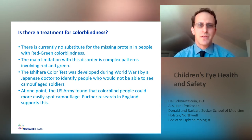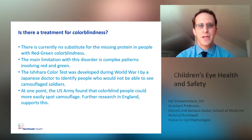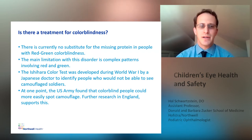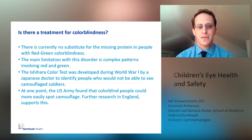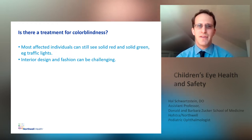There is currently no substitute for the missing protein in people with red-green colorblindness. The main limitation with this disorder is complex patterns that involve red and green. The Ishihara color test was developed during World War I by a Japanese doctor to identify people who would not be able to see camouflaged soldiers. At one point, the U.S. Army found that colorblind people could actually more easily spot camouflage. Further research in England supports this as well. Most affected individuals can still see solid red and solid green, such as traffic lights. Interior design and fashion can be challenging though.